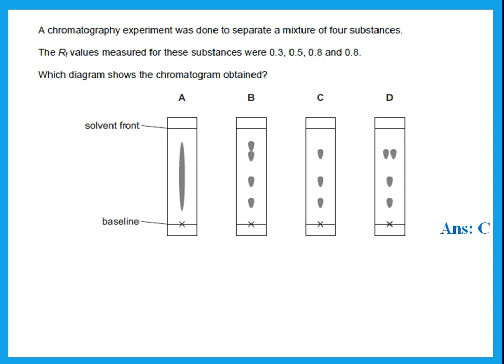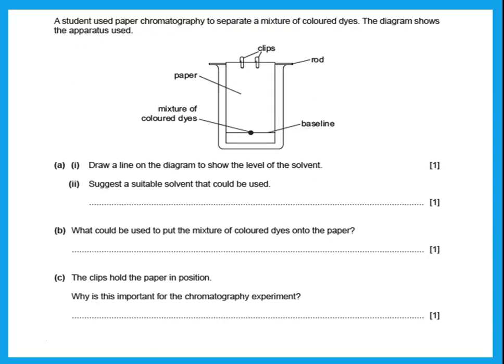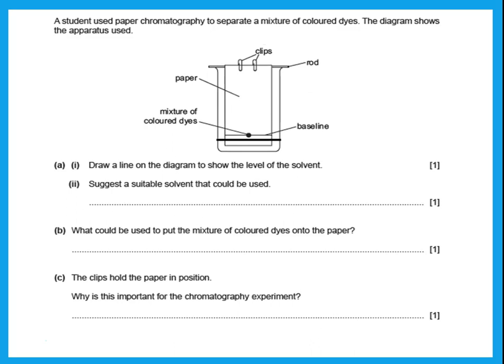A student used paper chromatography to separate a mixture of colored dyes. Draw a line on the diagram to show the level of the solvent. The solvent should be touching the lower edge of the paper but should not reach the spot of the mixture of colored dyes.